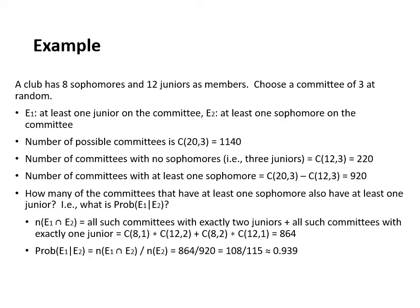Let's illustrate how we would use this on an example. Let's say we have a club with eight sophomores and 12 juniors as members, and we want to choose a committee of three at random. Event e1 is defined as at least one junior on the committee and event e2 is defined as at least one sophomore on the committee. We need to compute a couple of helper values. The total number of possible committees is C(20,3) which is equal to 1,140.